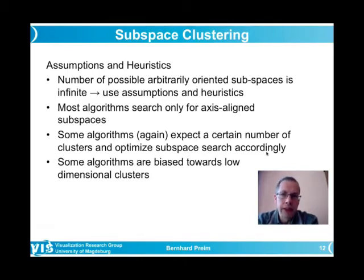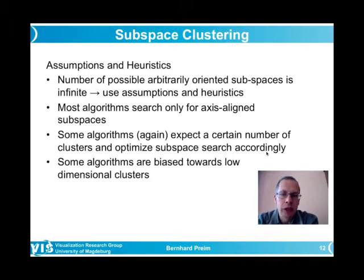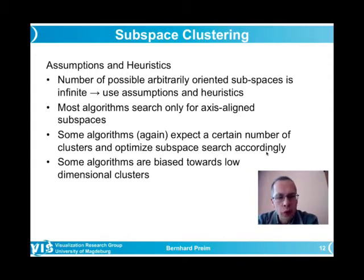The number of possible subspaces is very large, even infinite without restrictions. Axis-aligned subspaces represent a useful restriction. Some algorithms expect a fixed number of clusters, similar to k-means. Some algorithms are biased toward low-dimensional subspace clusters, which are often more interesting; high-dimensional subspaces may indicate overfitting, though this is not always the case.